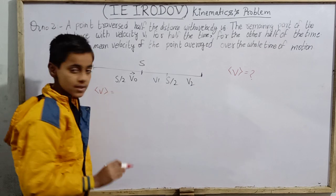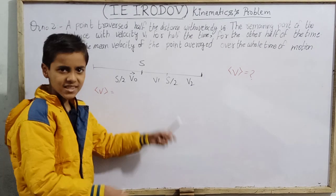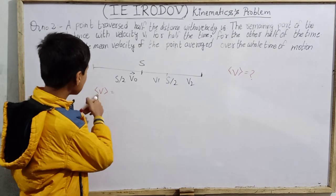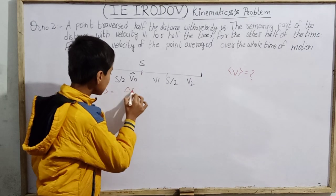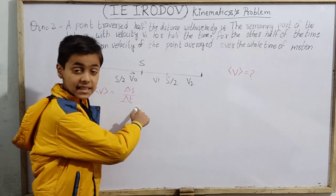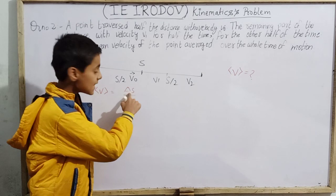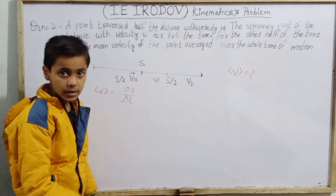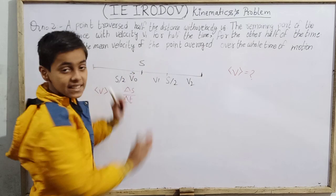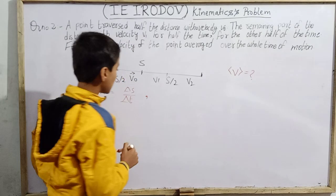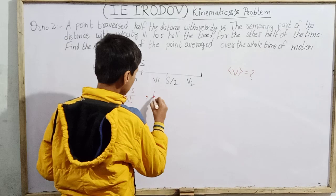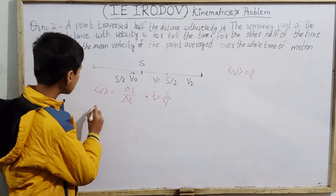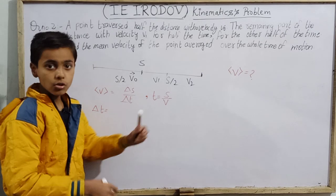Mean velocity and average velocity are the same thing — just written in different forms. Average velocity equals delta S divided by delta T. We don't know delta T yet. Delta S is the total distance S, because S/2 plus S/2 gives us S. The time formula is distance divided by speed.